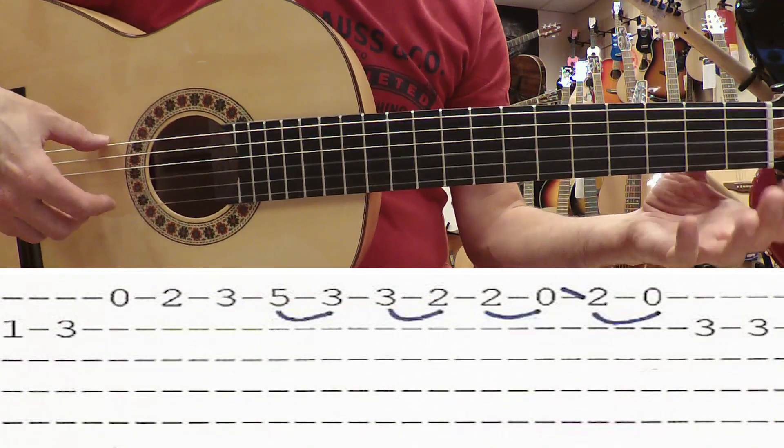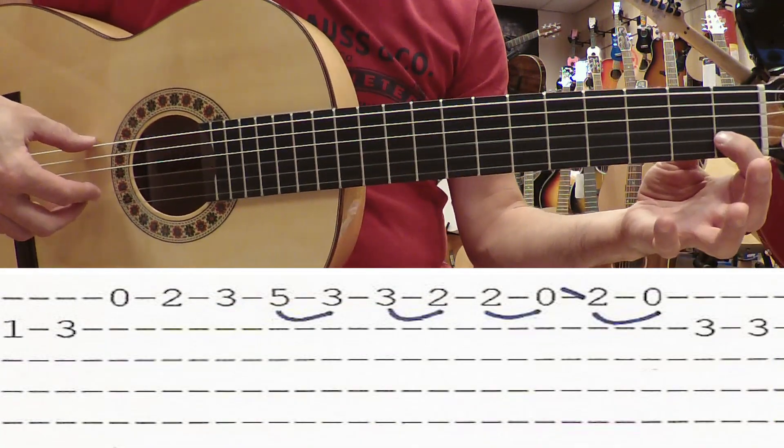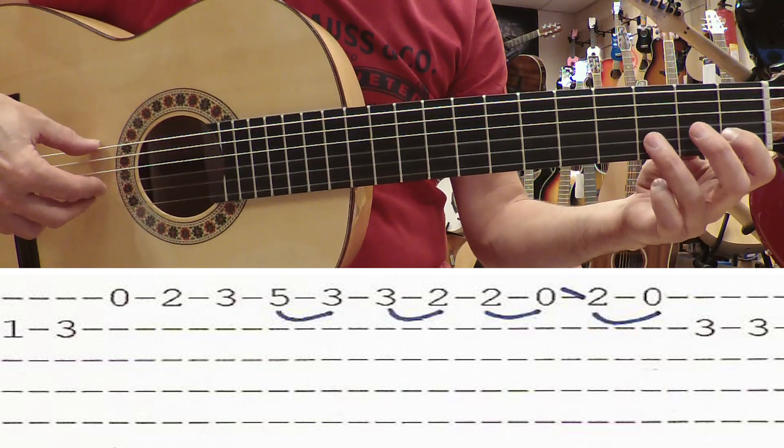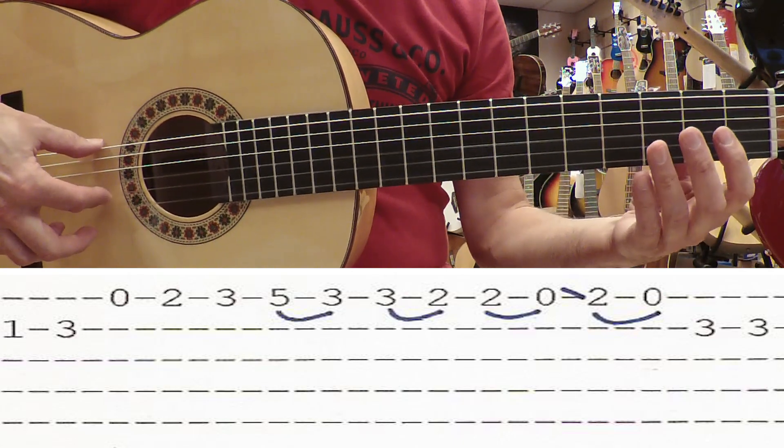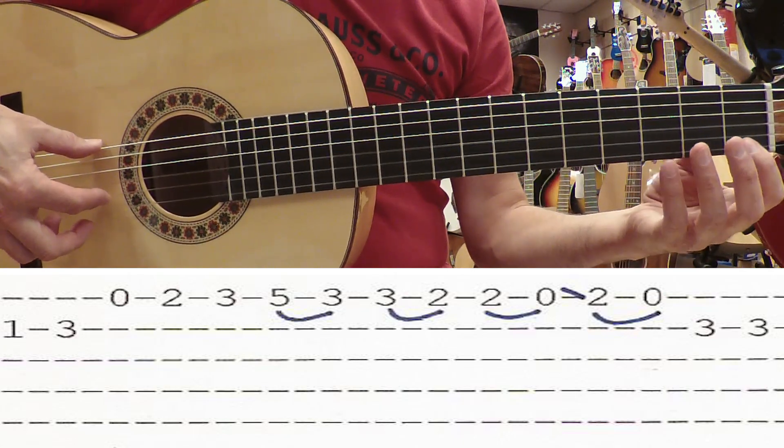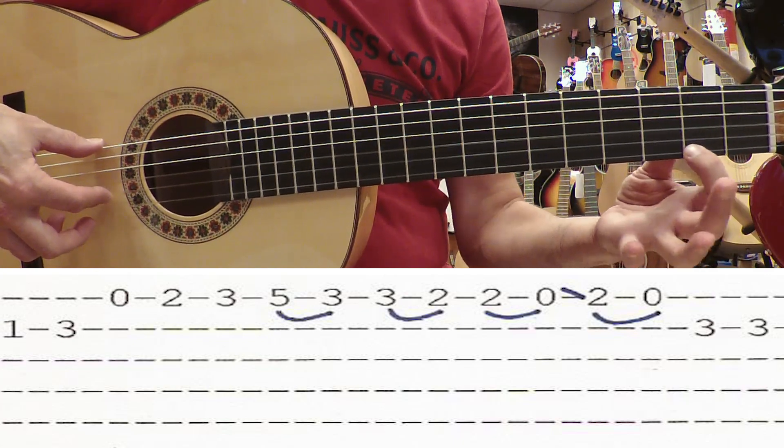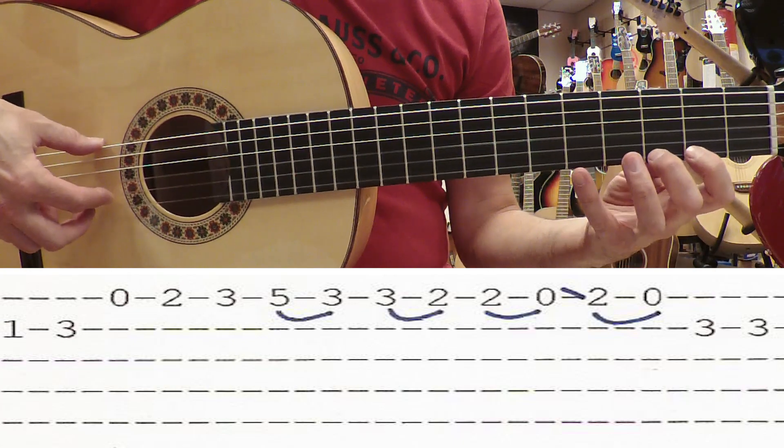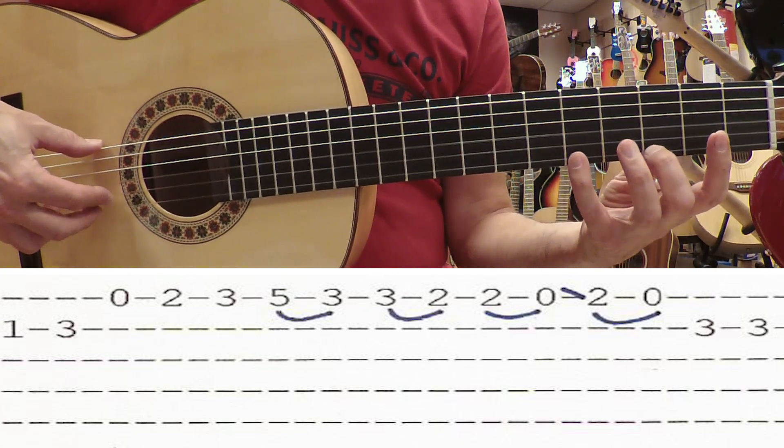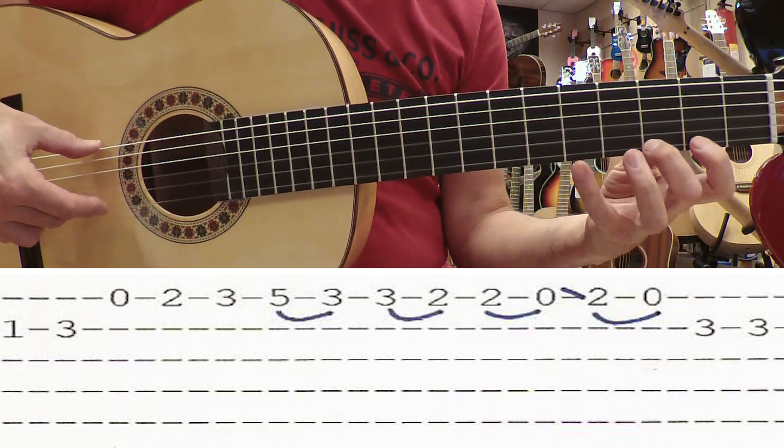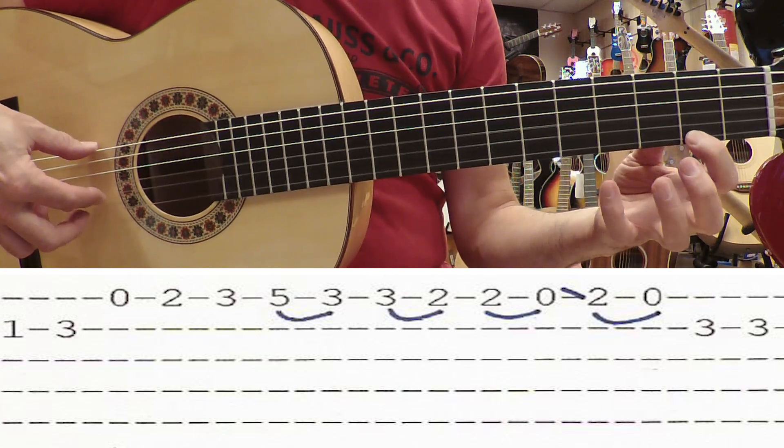Siguiente compás. El 1 y el 3 lo doy a la posición en la que estaba antes. El 1 con el dedo 1, el 3 con el dedo 3. Y ahora para dar el 2 de la primera cuerda, bajo esta posición un traste. Es decir, el traste 2 le voy a dar con el dedo 1. Y para ligar el 5 con el 3, pues hago esto. Y ahora 3, 2.